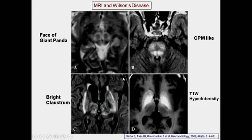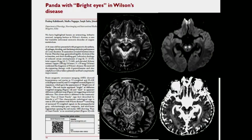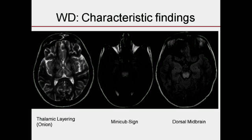These are all characteristic and very highly suggestive findings. This is the face of giant panda sign. This is the central panda. This is also called myelinolysis or osmotic demyelination. There is the bright claustrum, and the liver hyperintensity on T1. We also named one finding as 'panda with bright eyes' — normally the red nucleus in the midbrain is dark, but in this patient the red nucleus is bright.